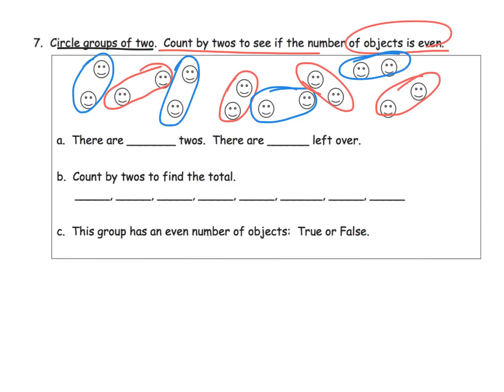Since everybody has a partner, we know it's even. We can count. There are how many twos? One, two, three, four, five, six, seven, eight. So there are eight twos and there's nothing left over. Count by twos to find the total. We had 2, 4, 6, 8, 10, 12, 14, 16.